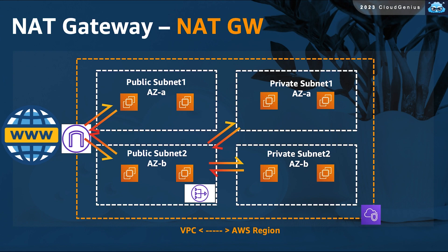Traffic will be initiated from your resources, then routed to the NAT gateway. Address translation occurs, then the NAT gateway forwards the traffic to the IGW, and then to the internet.